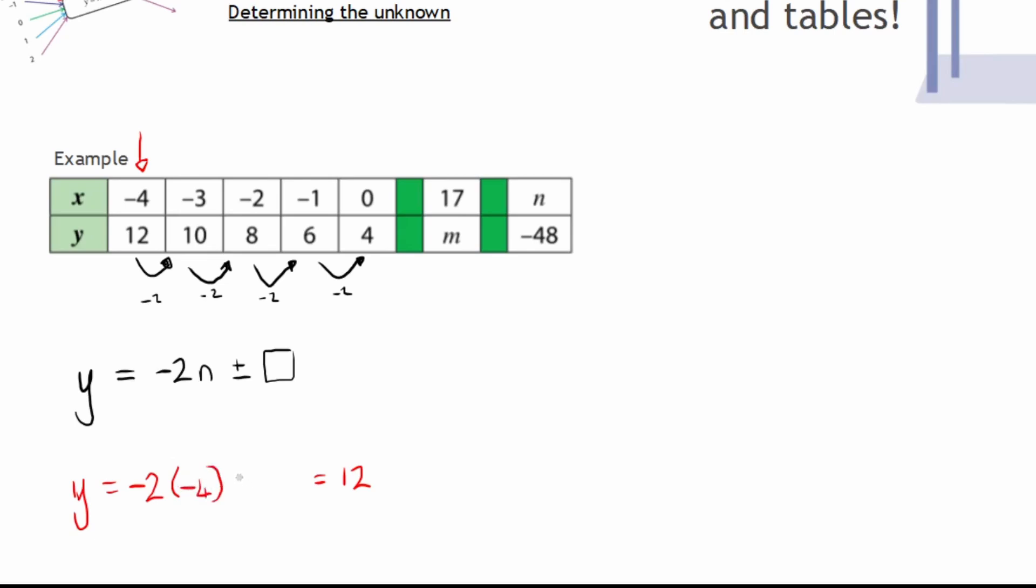By using my formula I'm going to say negative 2, and what is that input, that position? It's negative 4, and then I add or subtract something to get to 12. So let us have a look. Now negative 2 multiplied by negative 4 is positive 8. Now what do I add or subtract to positive 8 to get to 12? Well, I still need to add another 4. So that plus 4 is going to be my constant that is added there. I can rewrite my general formula or my function as to be negative 2n plus 4.